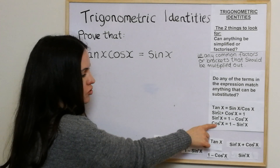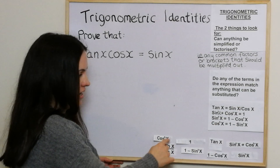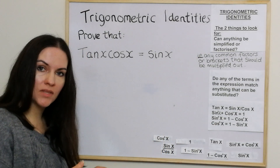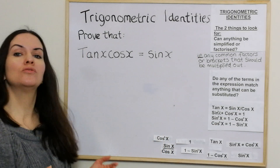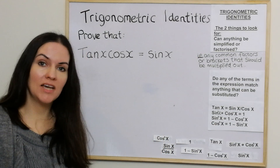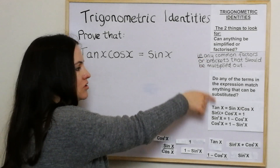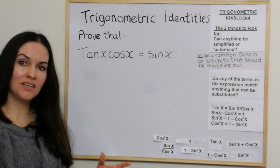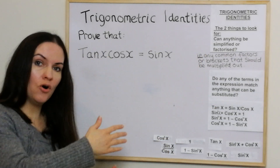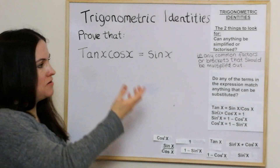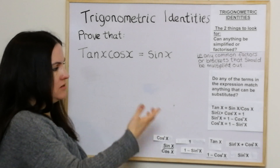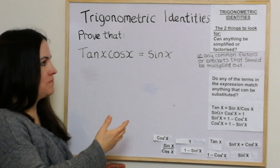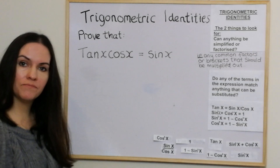So for cos²x, I have 1 - sin²x on the other side. I'm going to work through some examples. These are the two things you're looking for — you don't necessarily have to do them in that order. You just pick whichever one seems relevant at that particular point, and you should get to the answer.